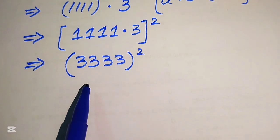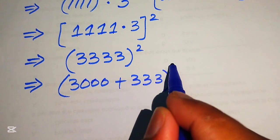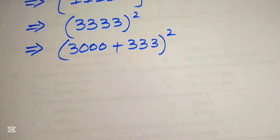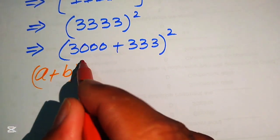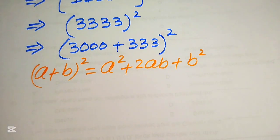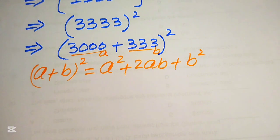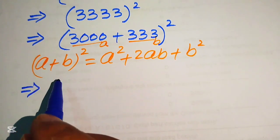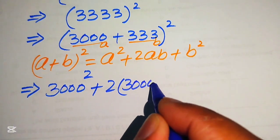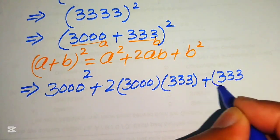To expand 3333 squared, we rewrite 3333 as (3000 plus 333) and apply the formula (a plus b) squared equals a squared plus 2ab plus b squared, where a = 3000 and b = 333. So we get 3000 squared plus 2 times 3000 times 333 plus 333 squared.